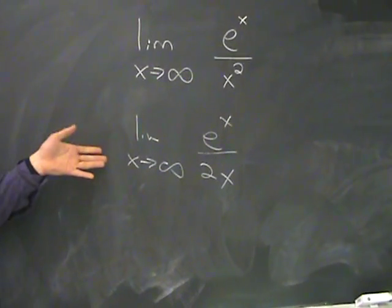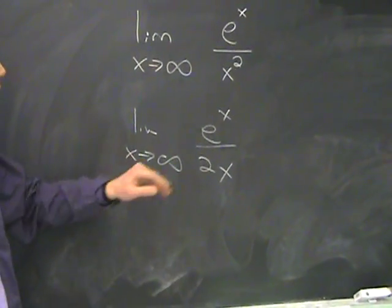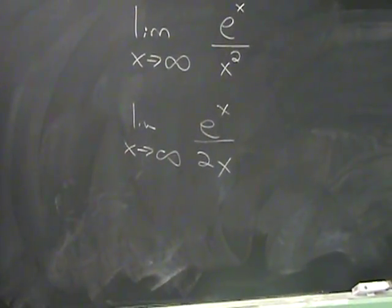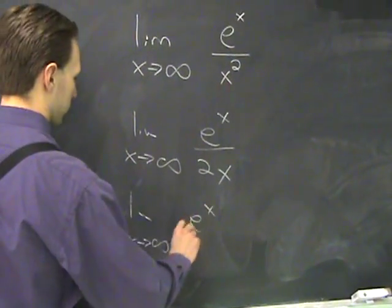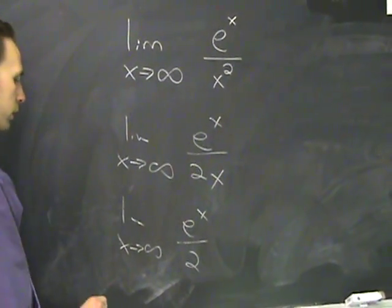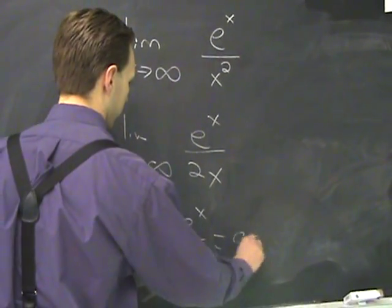And again, when you try to do it again, you get indeterminate, so apply the rule again. Limit x goes to infinity, e to the x divided by 2. And then this one is obviously infinity.